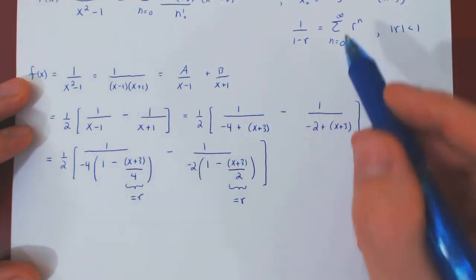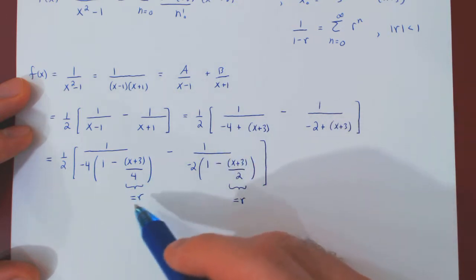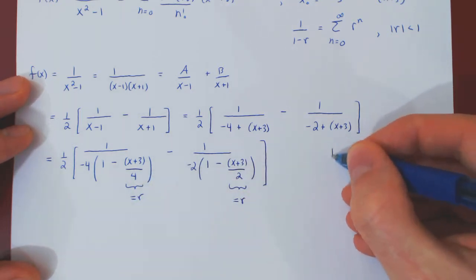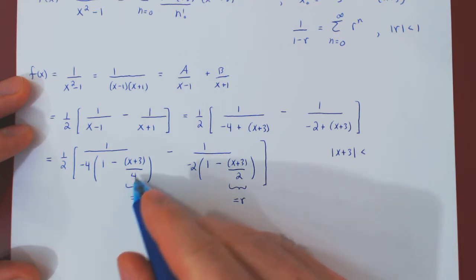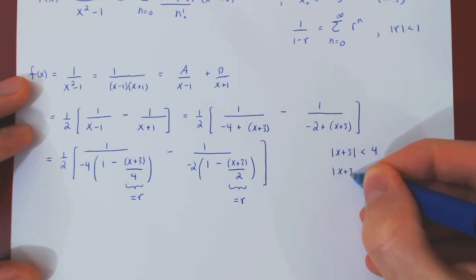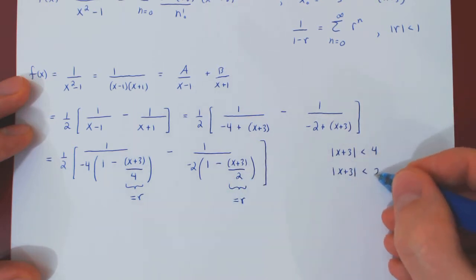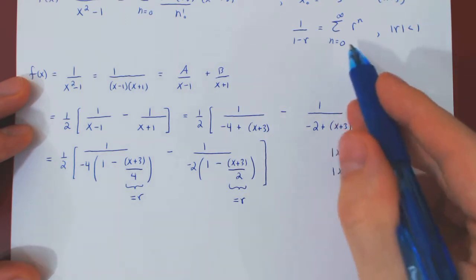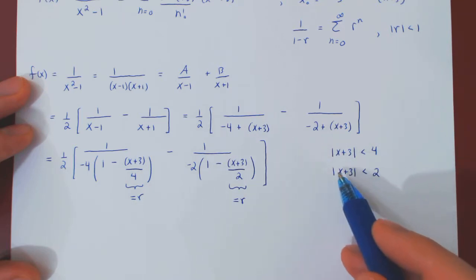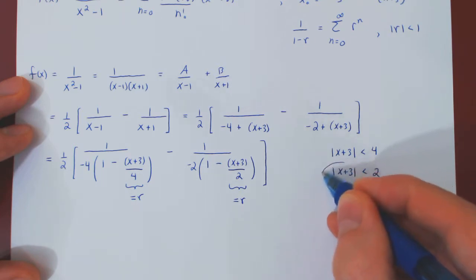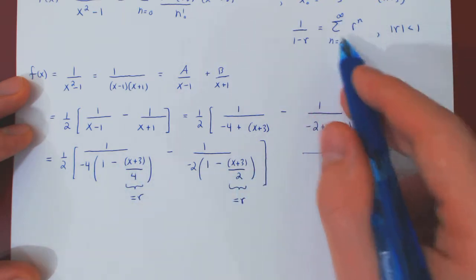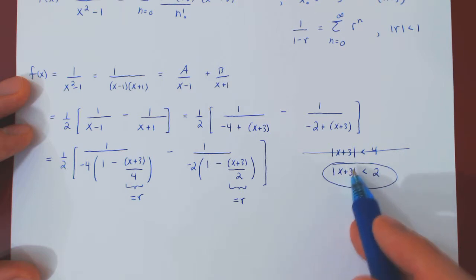Notice that the series equality is valid only if the absolute value of r is less than 1. In the first case that means (x plus 3) in absolute value must be less than 4, and in the second case (x plus 3) in absolute value must be less than 2. So if we want both series to be valid, we must take the more restrictive condition: (x plus 3) in absolute value is less than 2.